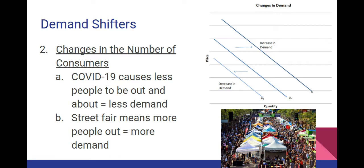The governor in Minnesota ordered that all restaurants and bars would be closed to dining in. But let's say the governor never did that — even just the warning that people might spread the virus would cause demand to naturally go down, because many people would say they shouldn't go out. You'd see the demand curve shift to the left. The demand goes down, meaning that if the price stayed the same, fewer people would buy. So in order to get more people to buy, a business owner would have to lower the price.